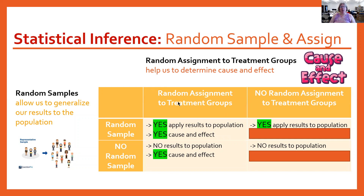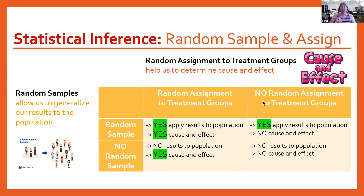If you don't randomly assign people to treatment groups, then you cannot get cause and effect. So what that means is if you aren't doing an experiment with treatments, you're not going to be able to get cause and effect, at least not without very sophisticated work that you would hire a statistician to help you with.